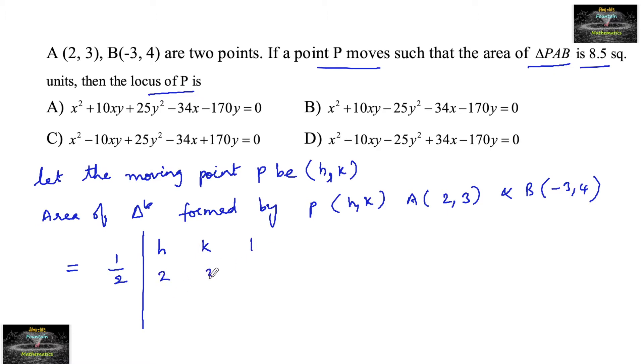half modulus of, so we can consider the determinant of H, K and 1; 2, 3 and 1; minus 3, 4 and 1. So this is in the determinant and again modulus we need to take. And it is given the area is 8.5 square units.